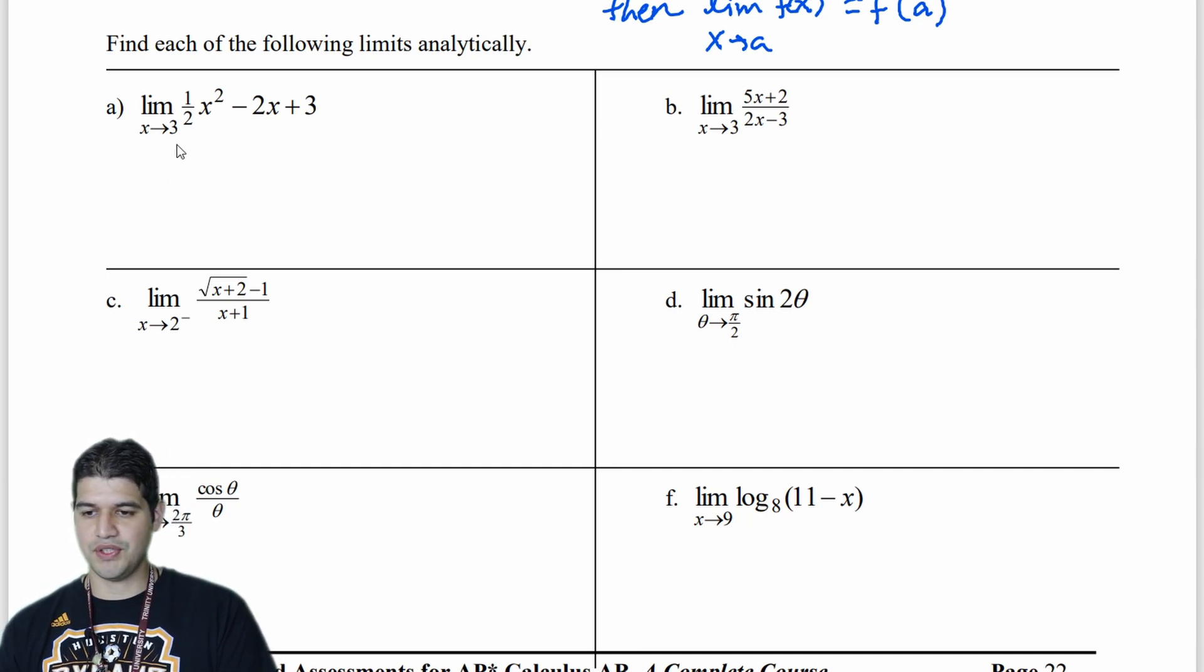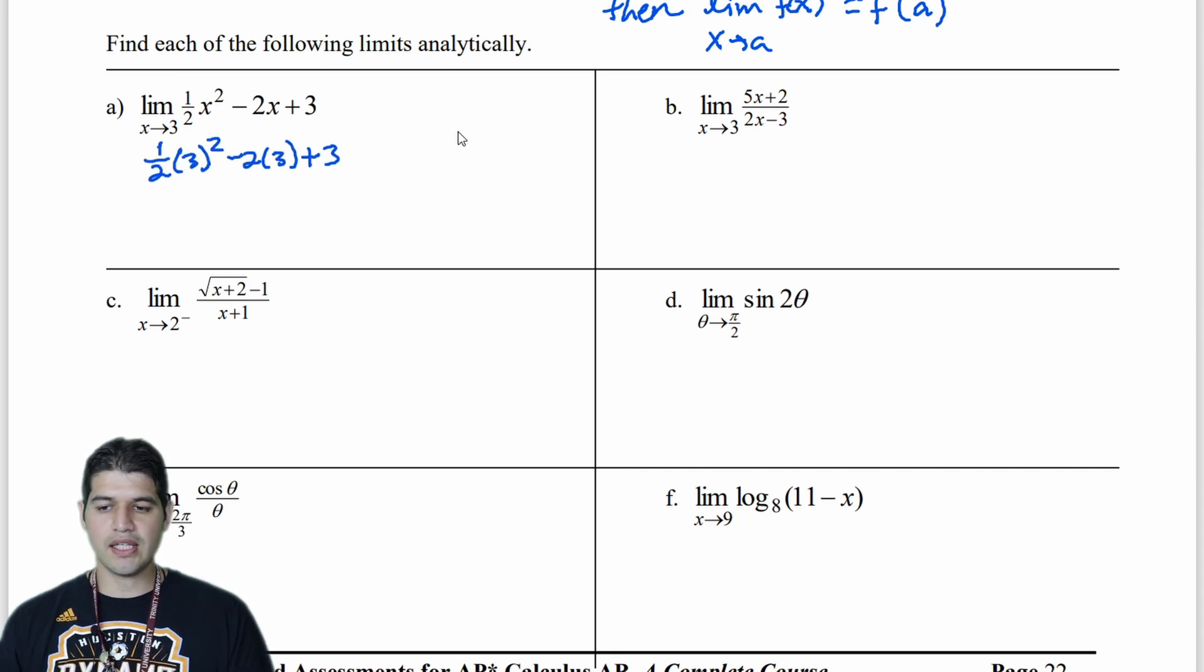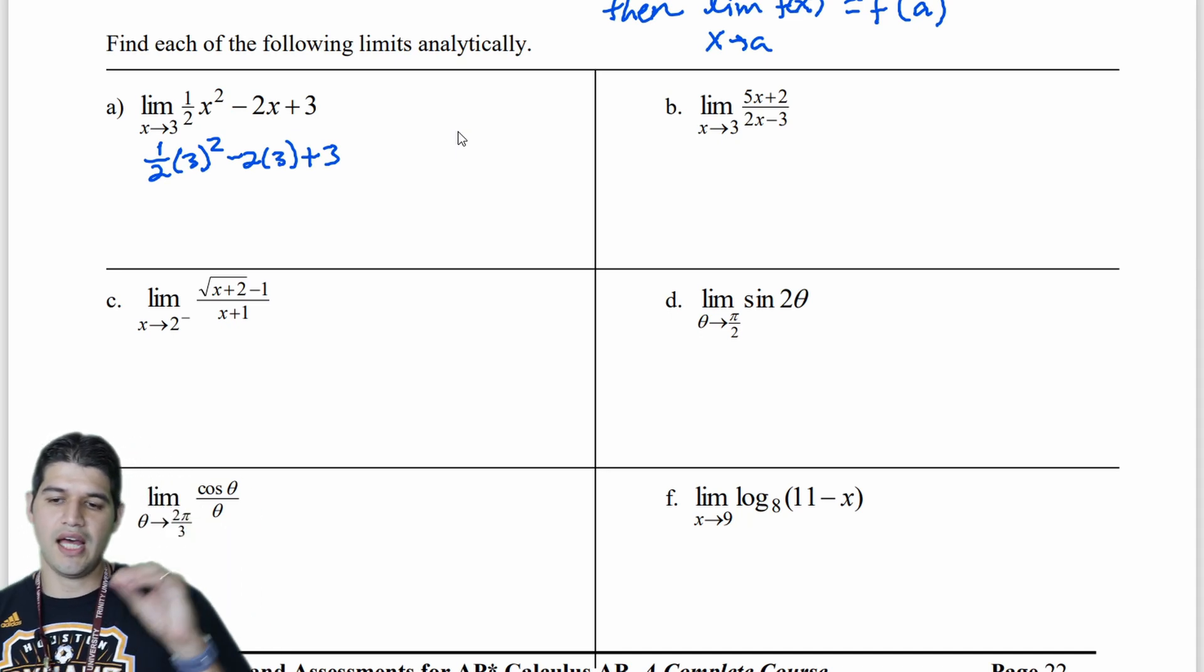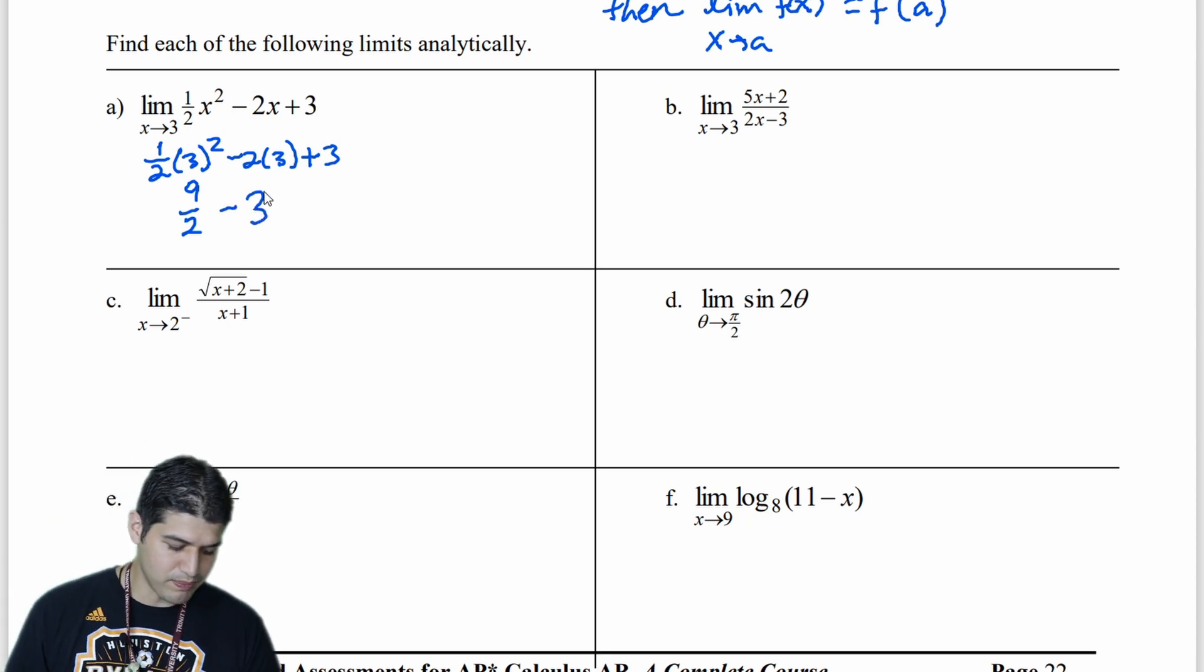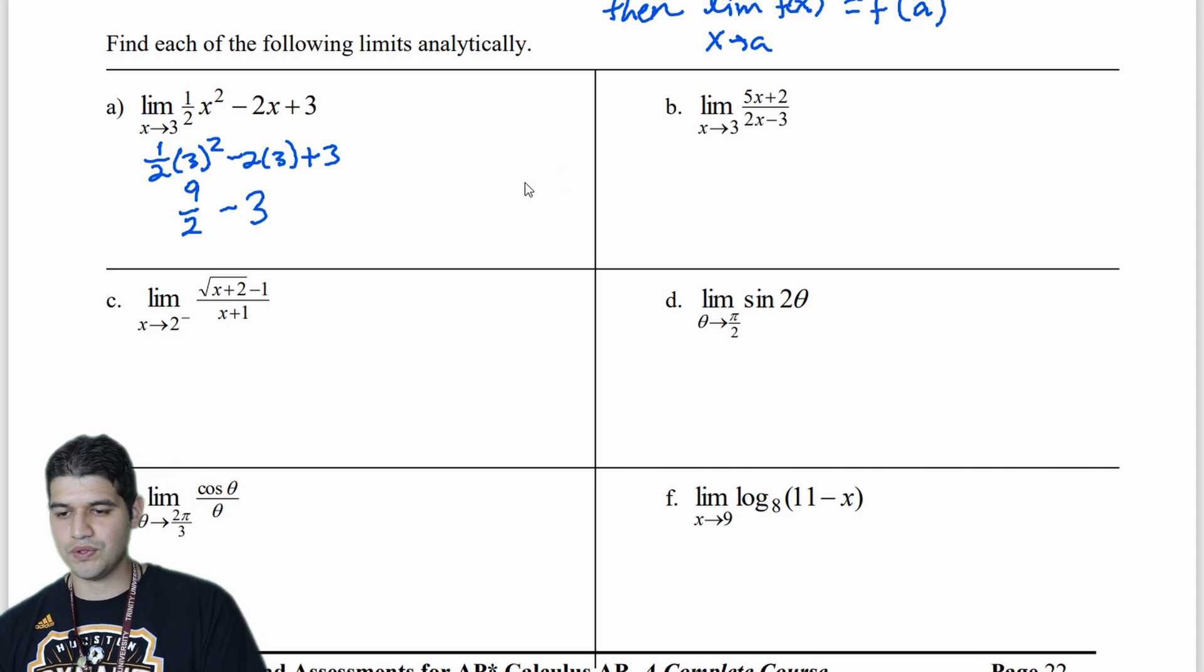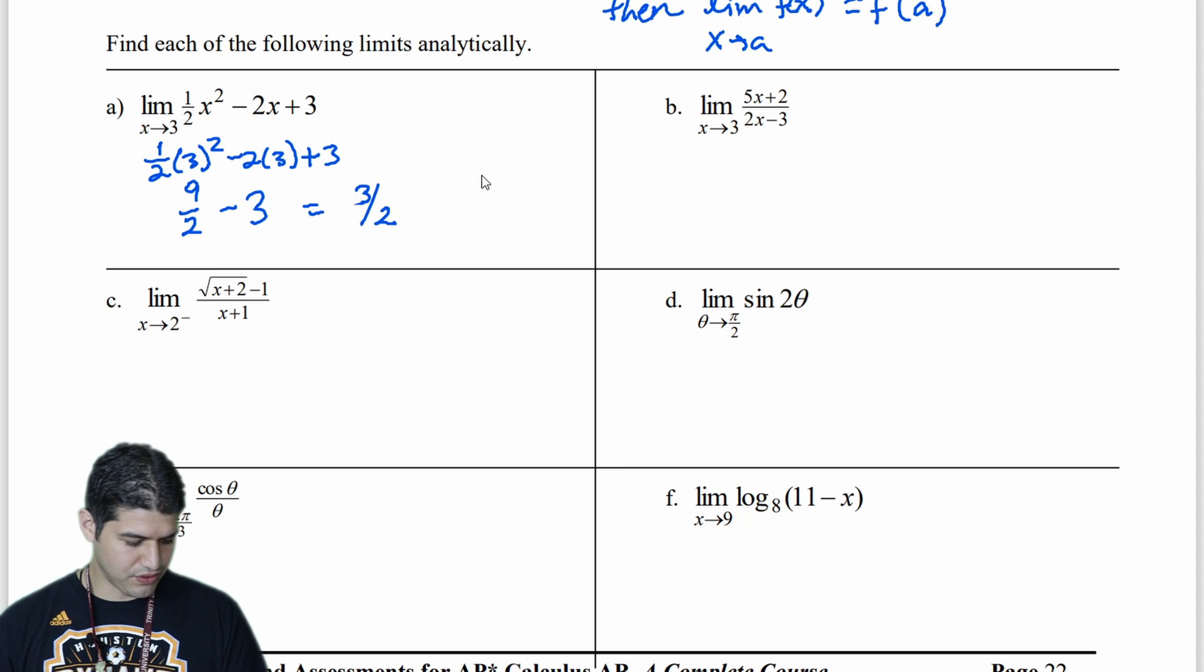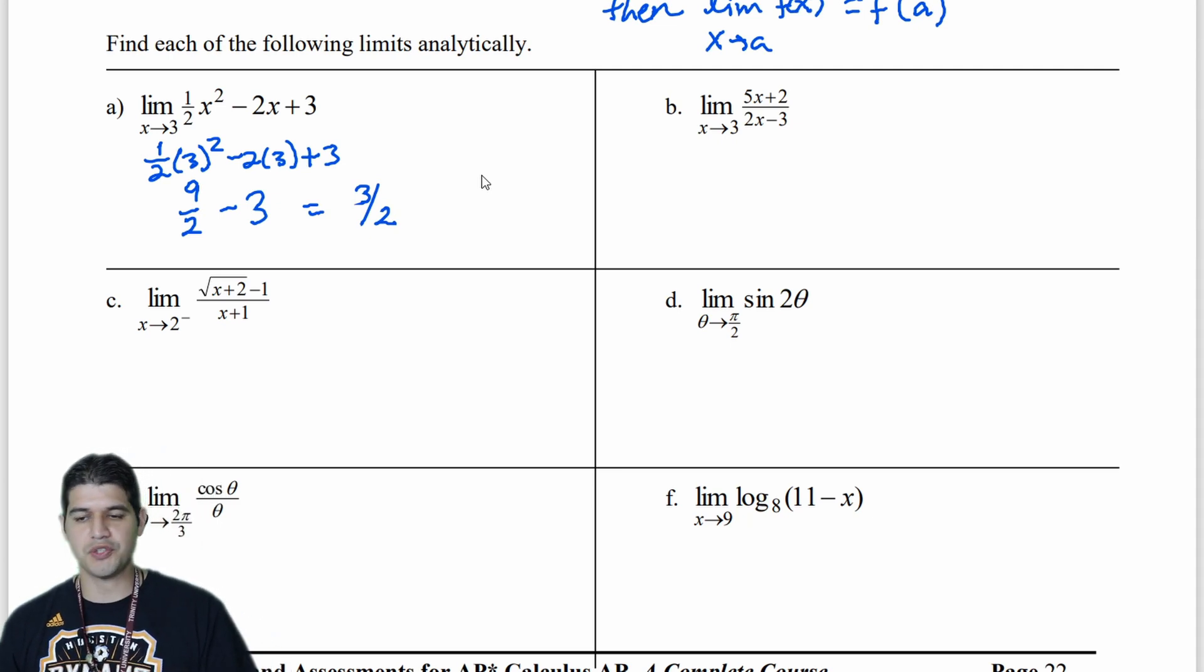Here I have the limit as x approaches 3. So let's substitute 3 in. 3 squared minus 2 times 3 plus 3. And let's evaluate that. So 3 squared, that gets you 9. 9 over 2, right here, minus 2 times 3. So that's minus 6 plus 3. So that's minus 3. So 9 halves minus 3. So 9 halves minus 3. So that's 6 halves. So I get equal to positive 3 over 2, just by substituting it.